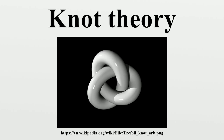The basic problem of knot theory, the recognition problem, is determining the equivalence of two knots. Algorithms exist to solve this problem, with the first given by Wolfgang Haken in the late 1960s. Nonetheless, these algorithms can be extremely time-consuming, and a major issue in the theory is to understand how hard this problem really is. The special case of recognizing the unknot, called the unknotting problem, is of particular interest.